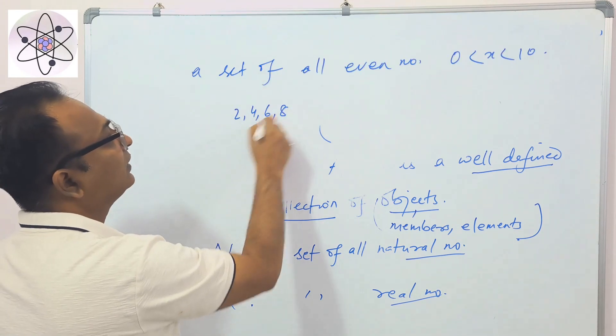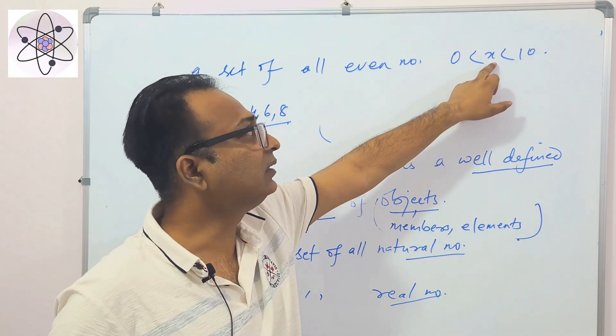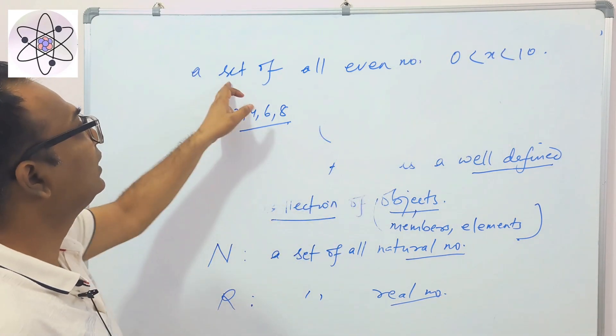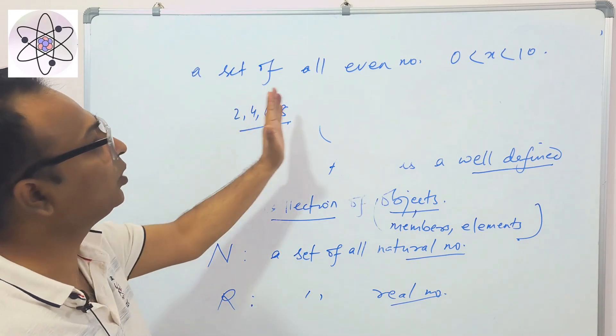6, 8. So this is well-defined. It cannot be 12. The objects lie between 0 and 10, both numbers are excluded, and these are even numbers. Then we have only four objects.